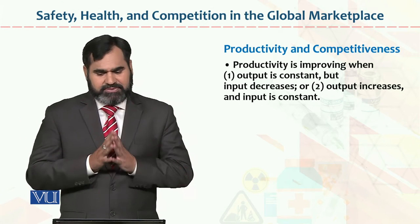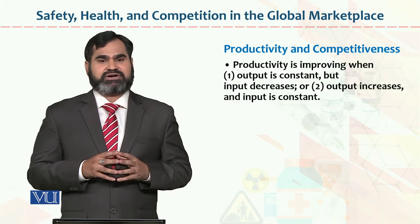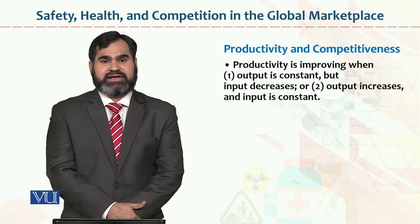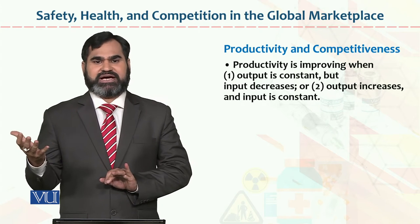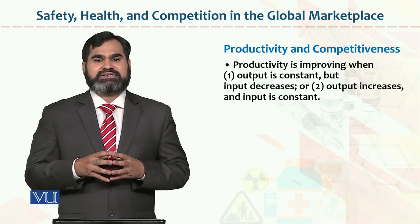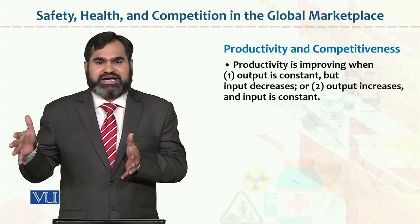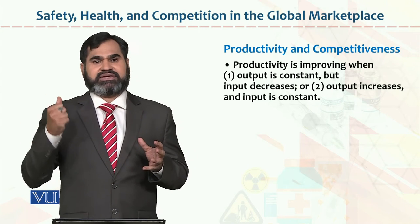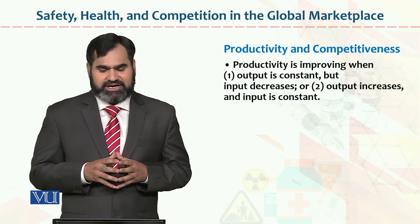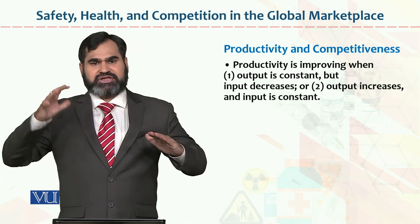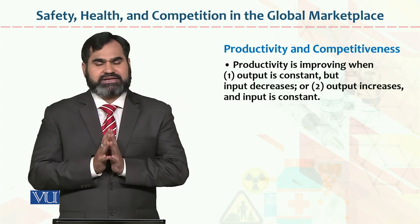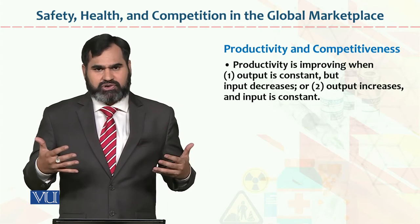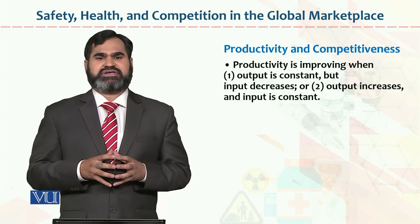Productivity is improving when output is constant but input decreases. This is a very important point. Input decrease means using less material while getting maximum output. This is possible when input is not wasted along the way, when input is of better quality, and when input achieves the desired outcome. Alternatively, output increases and input is constant. In good organizations, production, productivity, output, and input are continuously evaluated, controlled, and monitored on an ongoing basis, and organizational results are achieved.